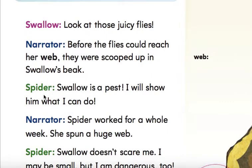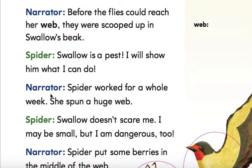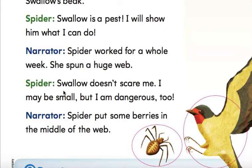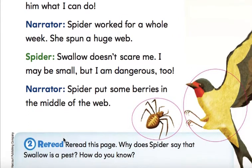Before the flies could reach her web they were scooped up in Swallow's beak. Spider: Swallow is a pest. I will show him what I can do. Spider worked for a while — a whole week. She spun a huge web. Swallow doesn't scare me. I may be small but I am dangerous too. Spider put some berries in the middle of the web.